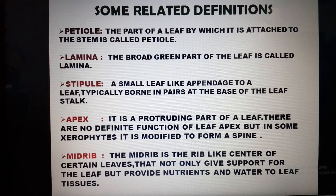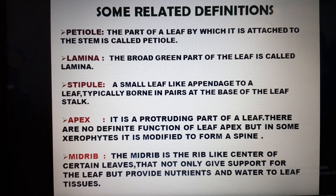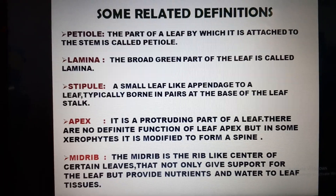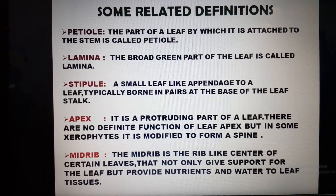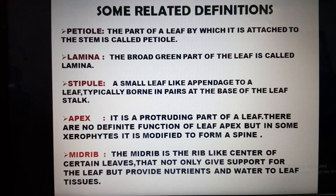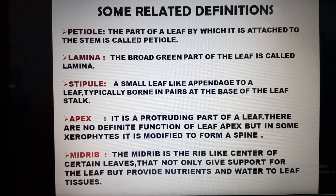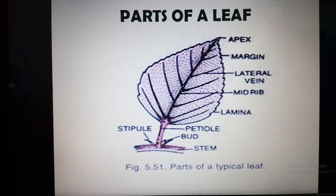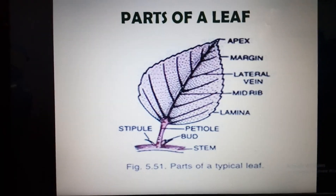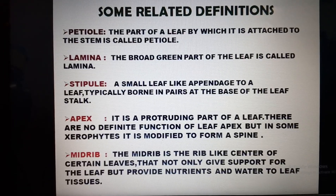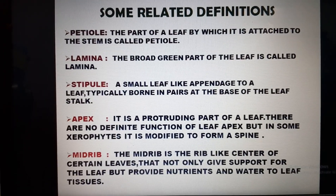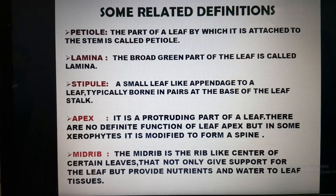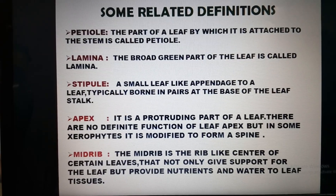Next we are coming to the lamina. It is the green part of the leaf — this is called lamina. Next one is the stipule. The stipule is a small leaf-like appendage to a leaf, typically